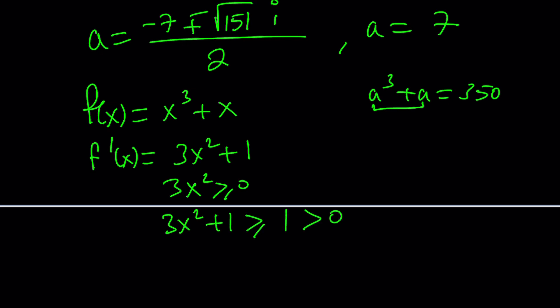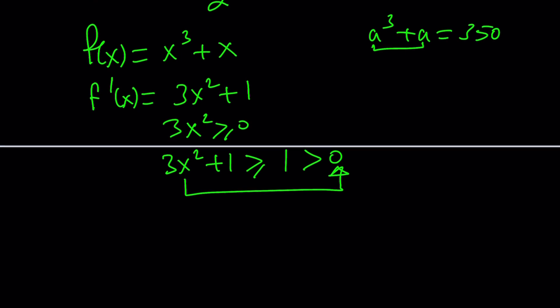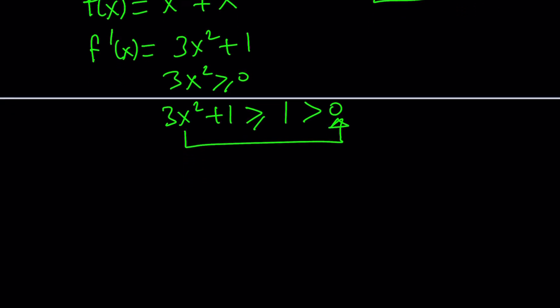But 1 > 0. This automatically implies through the transitive property that 3x² + 1 is always > 0, which means it can never be negative or zero. This means the first derivative is positive, so f(x) is always increasing.